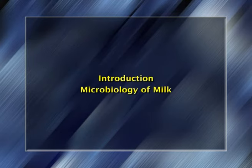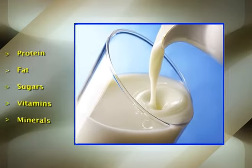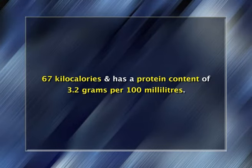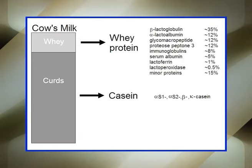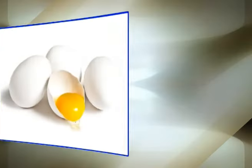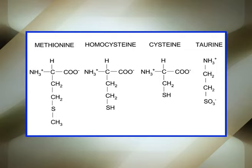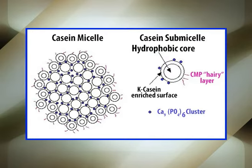Raw milk is a complete food which contains proteins, fat, sugar, vitamins and minerals. Cow's milk is the preferred choice for most people, providing 67 kilocalories and a protein content of 3.2 grams per 100 milliliters. Milk proteins include casein about 80% and whey about 20%; whey has a higher nutritional value than casein. Milk proteins have a high biological value but, unlike egg proteins, they lack sulphur-containing amino acids. Casein in cow's milk combines with calcium to form caseinogen.